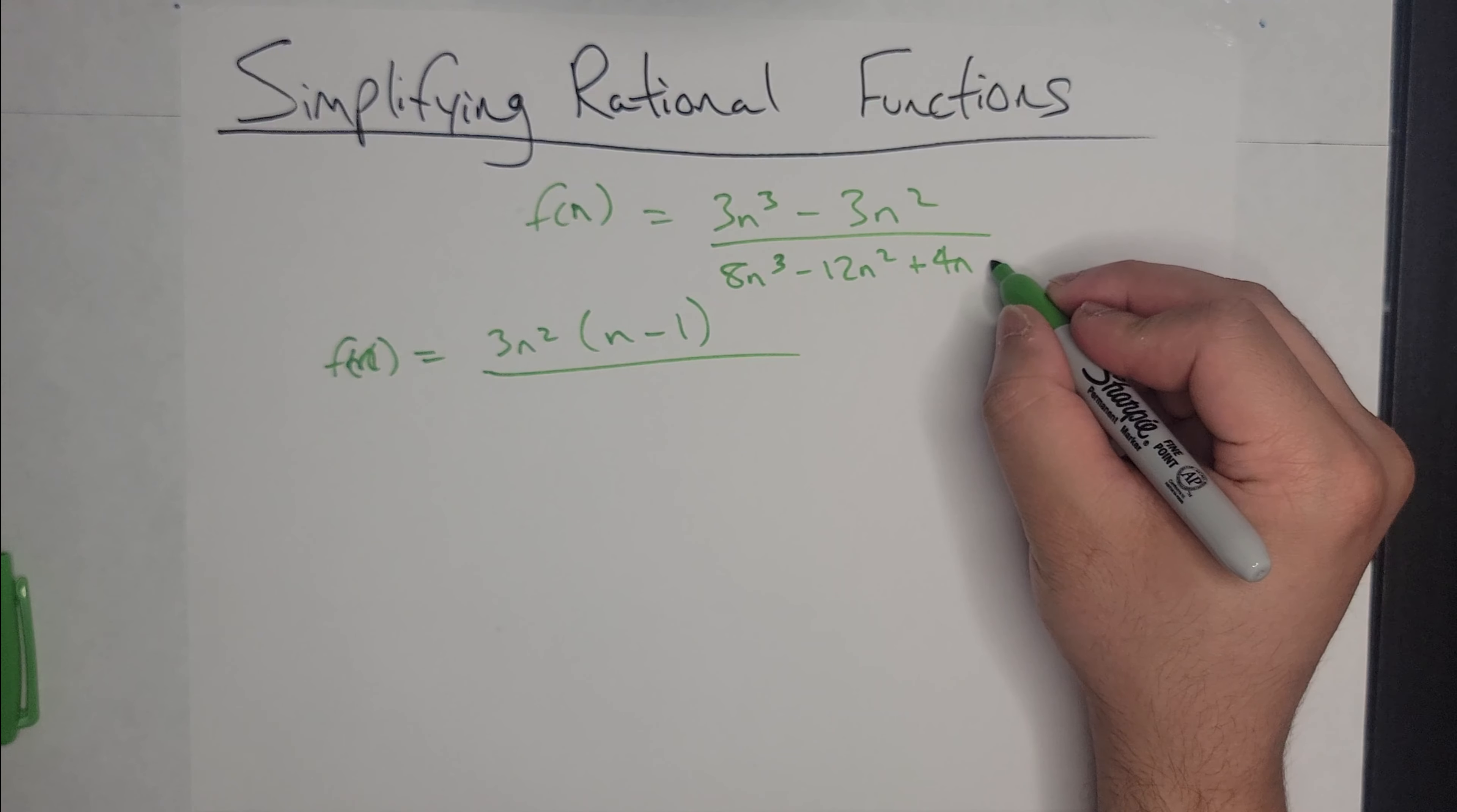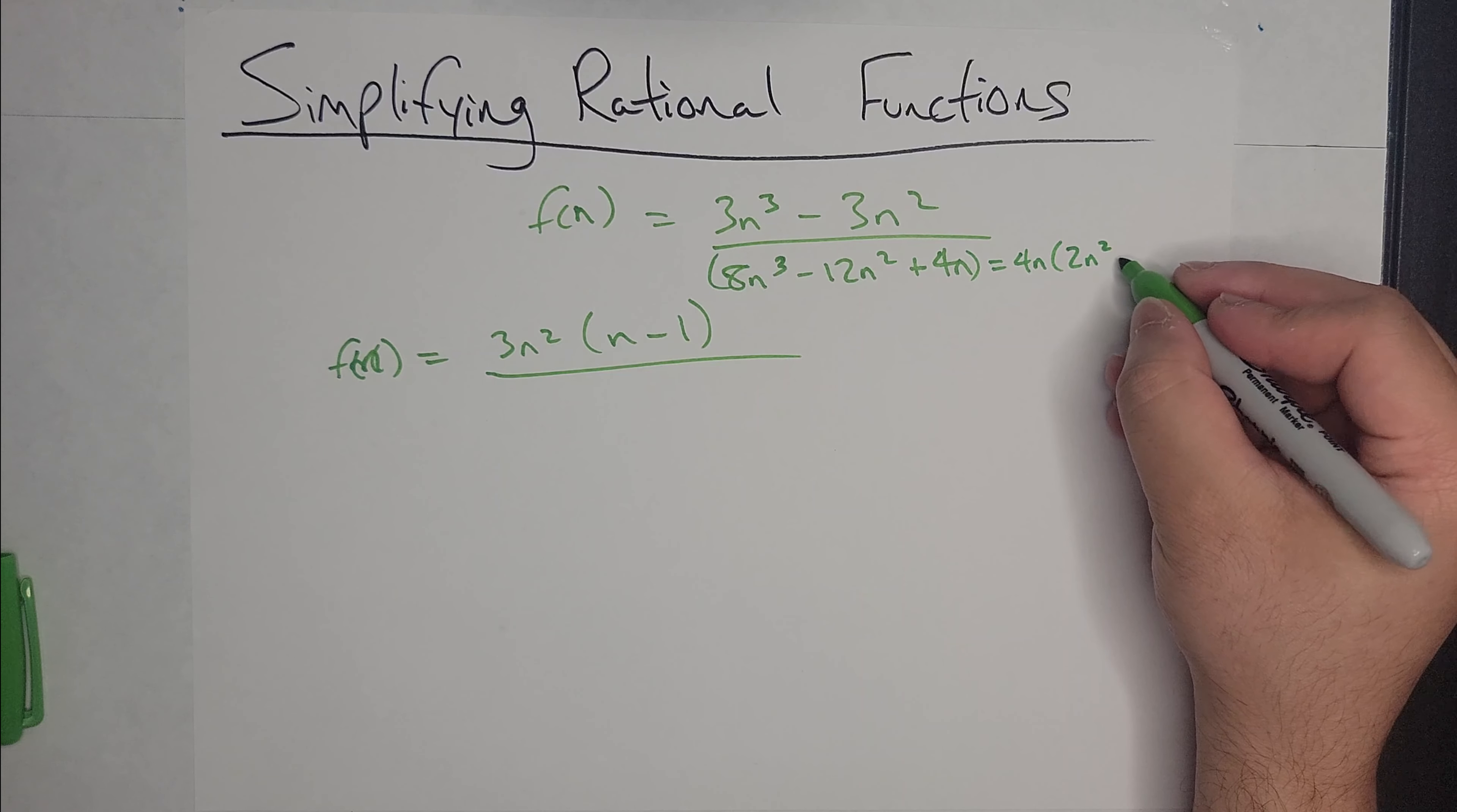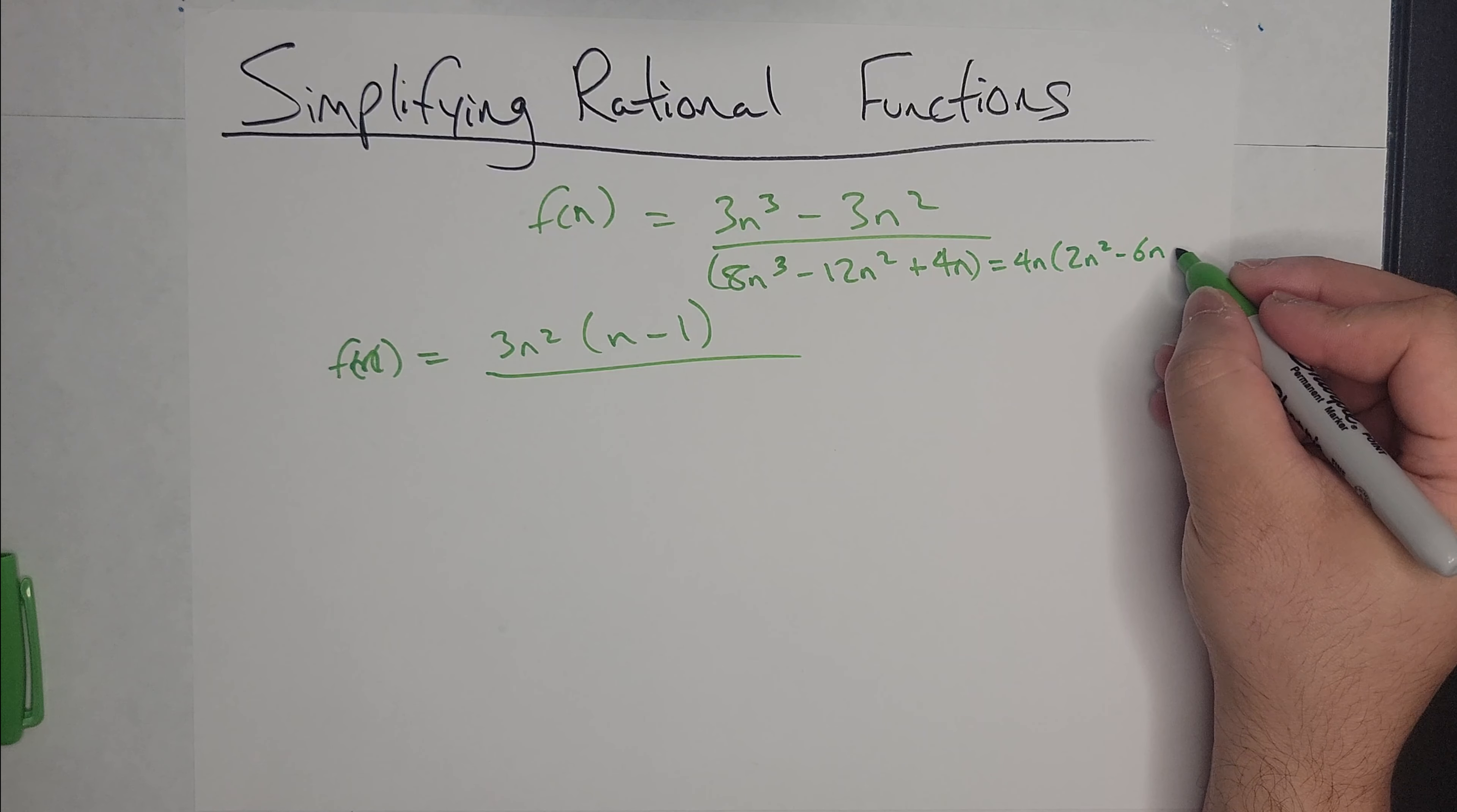Which will leave me with... If I take out 4n, I'll leave me with 2n² - 6n + 1. Oh, sorry. No. If I factor out a 4n, I'll leave me with 3 here. My mistake.